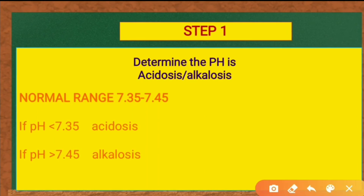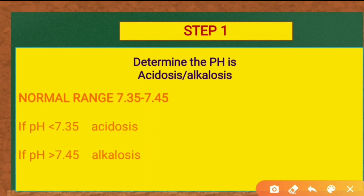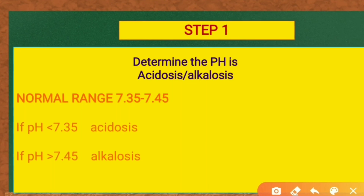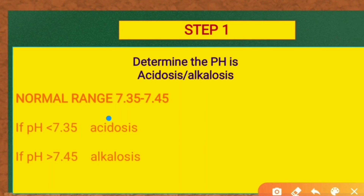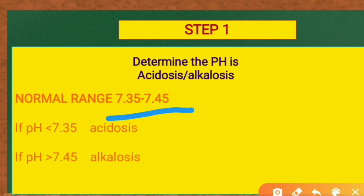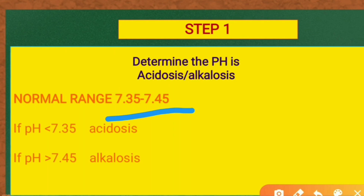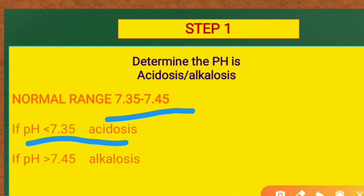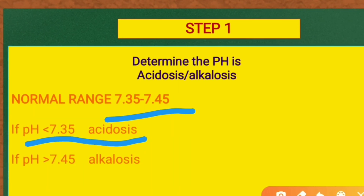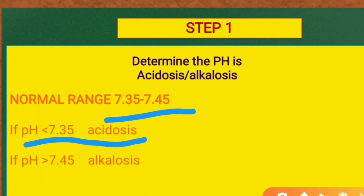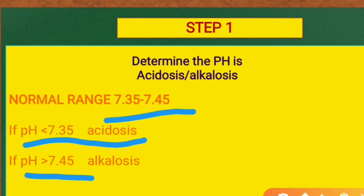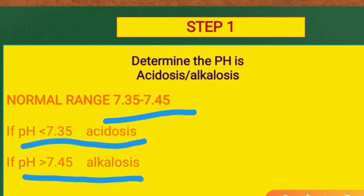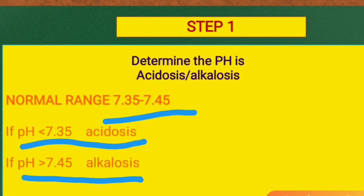How can we determine if the pH indicates acidosis or alkalosis? The normal range is 7.35 to 7.45. If the pH is less than 7.35, it is acidosis. If the pH is greater than 7.45, it is alkalosis.